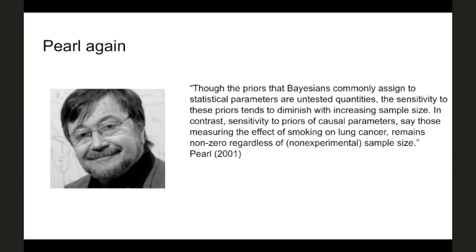Pearl makes a point quite relevant here: in Bayesian statistics usually you're just using exchangeability within a plate, and you can infer things where the prior sensitivity washes out with large amounts of data. But for causal problems, this is not necessarily the case — the assumptions needed to do causal inference do not necessarily wash out. We're saying you can also do these problems only in the Bayesian paradigm, and we're indeed having these prior assumptions that are not going away with large sample. So we sort of see Pearl's point as valid here.